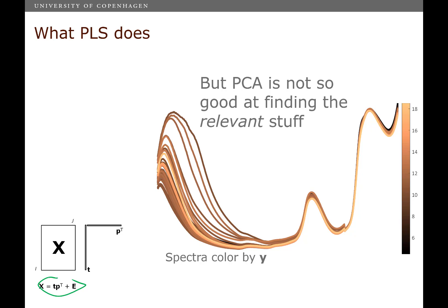So here you see an example data set. It's a spectral data set. And each spectrum, each sample is colored by the Y that we want to predict. And you can see that there's a lot of variation in this area here, but the covariation, the relation to the Y information is actually not too good.